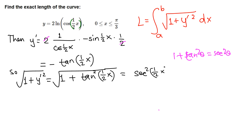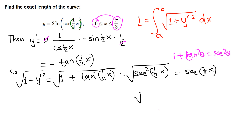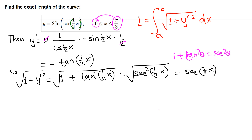On this interval from 0 to π/3, secant is positive, so when we cancel the square root with the square, the output is just sec(x/2). In general, √(x²) requires absolute value, but since sec(x/2) is positive on this interval, we don't need to worry about absolute value.